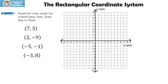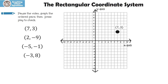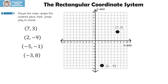This time you're going to pause the video, graph the ordered pairs, then press play to check. Let's see how you did. Here's seven, three — I went to the seven on the x-axis and then three on the y-axis. How about two, negative nine? I went two on the x-axis and negative nine on the y-axis. Let's look at negative five, negative one — I went to negative five on the x-axis and then negative one on the y-axis.